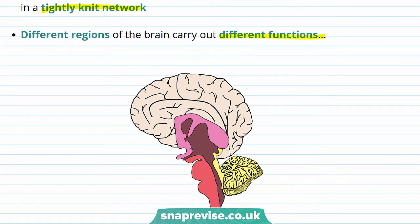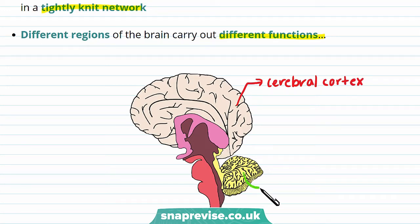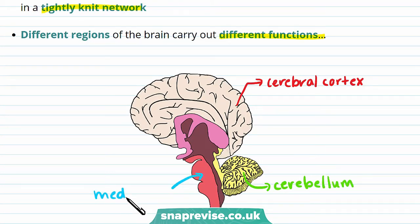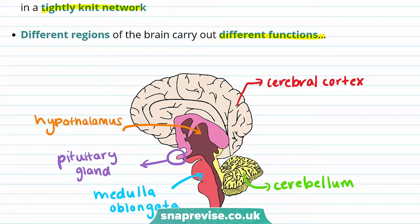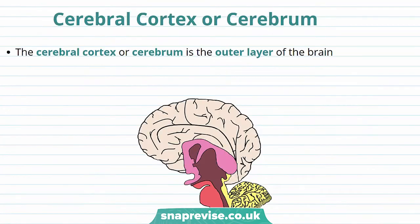Now let's talk about the different regions of the brain. The different regions carry out different functions. One part of the brain is the outer wrinkly layer, which is the cerebral cortex. Another part is the cerebellum, found at the back of your brain. At the base of your brain there's the medulla oblongata. Your brain also has the pituitary gland and the hypothalamus. We'll go through these structures in this video.